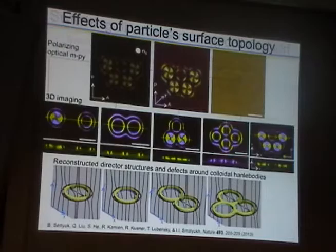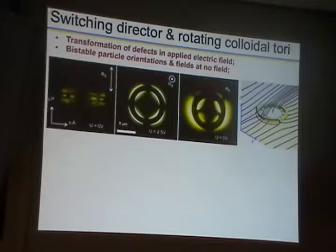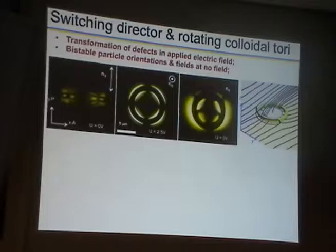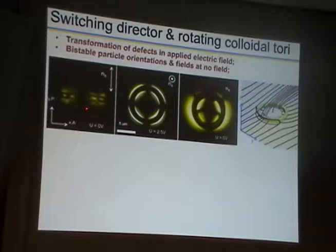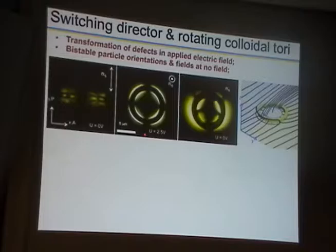When we have non-spherical particles, we can also switch their orientations and obtain multiple stable or metastable orientational states. Here is a planar cell where the far-field director is marked with a double arrow, and the initial state has a ring perpendicular to the plane of the image and the liquid crystal cell — looking at it edge-on. As we apply voltage — 2.5 volts — we realign the liquid crystal director to be more or less perpendicular to the substrates across the cell thickness.